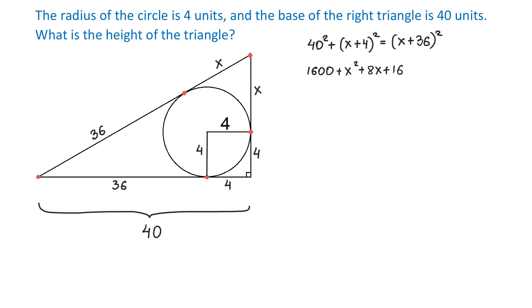On the right side, x plus 36 to the second power is x squared plus 72x plus 1296. Now we can cancel x squared on both sides, and on the left side, combine 1600 with 16. Then we will get 1616 plus 8x equals 72x plus 1296.